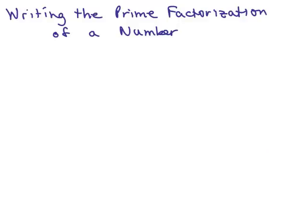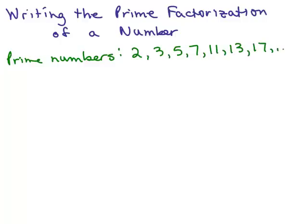In this video, we're going to go over how to write the prime factorization of a number. So first of all, we have to remember the prime numbers: 2, 3, 5, 7, 11, 13, et cetera. Remember, a prime number is a number that no other number goes into except 1 and itself.